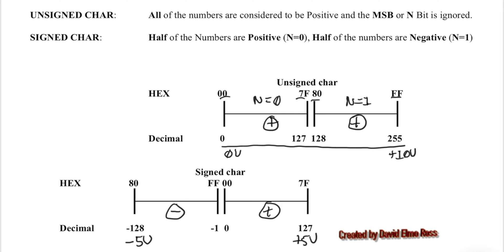For signed char, half the numbers where n equals 0, in the range 00 to 7F, are positive. And half the numbers are negative where n equals 1, in the range 80 to FF. These are going to be negative numbers because the most significant bit from 80 up to FF starts with a 1.